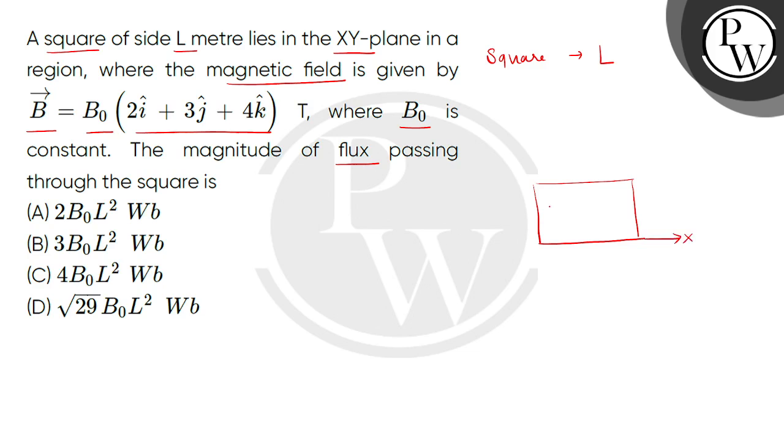We have the x axis and this is the y axis. Now we will make the area vector. It will be directed along the z axis. So we can write the area vector.